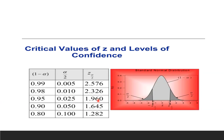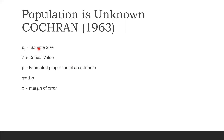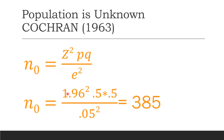Next we come to the case when population is unknown. This is from Cochran (1963), the reference from which I have taken this formula: n₀ = Z² × p × q / e². Here, n₀ is the sample size, Z is the critical value, p is the estimated proportion of an attribute, q is 1 minus p, and e is the margin of error.